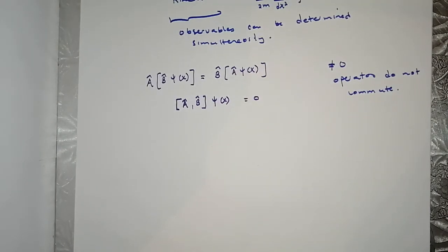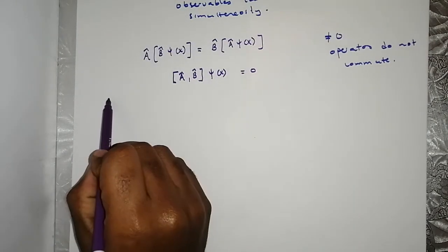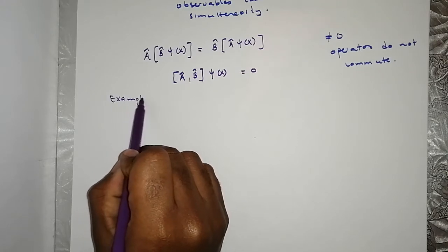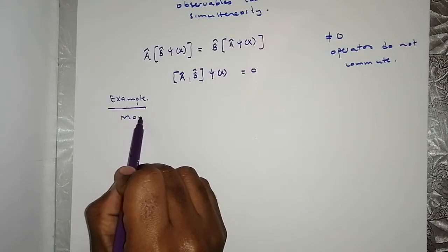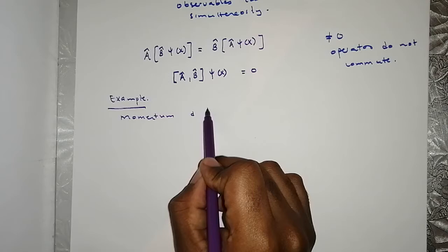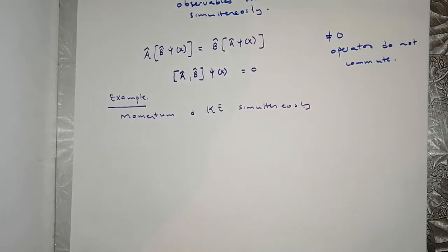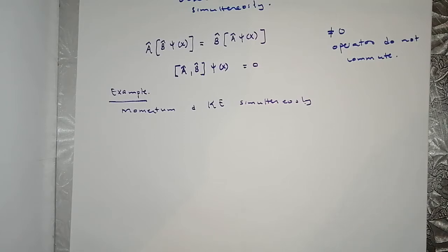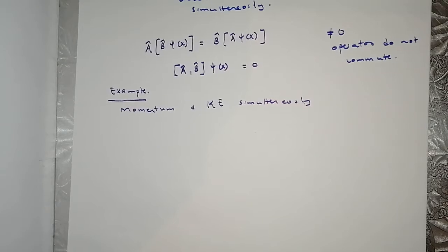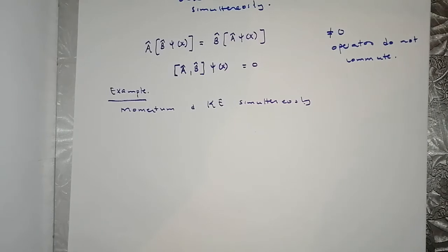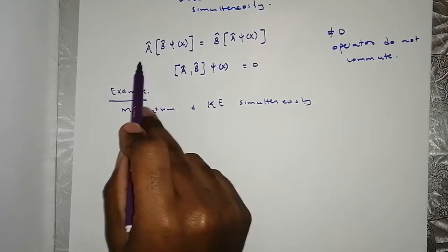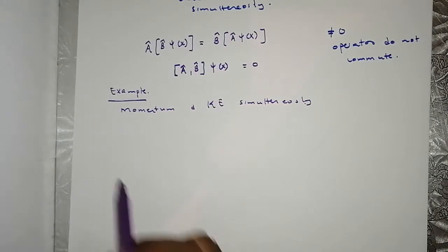So let us quickly look at an example to see if two operators commute or they do not commute. Can we determine momentum and kinetic energy simultaneously? Another way this question could be asked is: do the momentum operator and the kinetic energy operator commute? If they commute, the observables can be determined simultaneously. So we go through the same route as before.